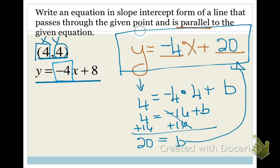Remember: all parallel lines have the same slope. You're going to use the same slope as your existing line, then use the point that's given to find your b value.